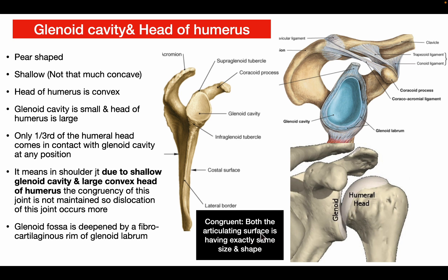Congruent means both articulating surfaces have exactly the same size and shape. In the shoulder joint, due to the shallow glenoid cavity and the large convex head of the humerus, congruency is not maintained — so dislocation occurs more frequently. The glenoid fossa is deepened by the fibrocartilaginous rim of the glenoid labrum so that the head of the humerus can fit properly in the glenoid cavity.